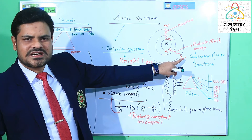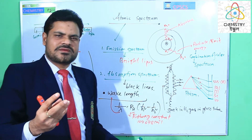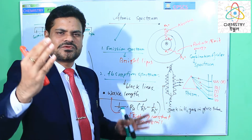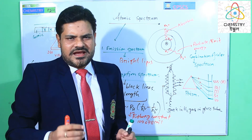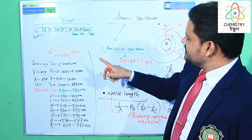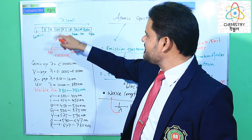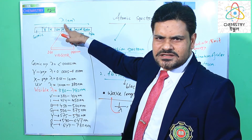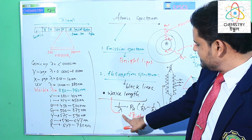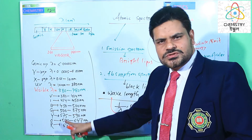When the electron jumps from different energy levels — fourth to one, fourth to two, fourth to three, or five to one — different types of spectrum we can get. The spectrum is always indicated by lambda (λ), expressed in nanometers. When you find out lambda, convert the value to nanometers, then compare it. Different values show different colors.